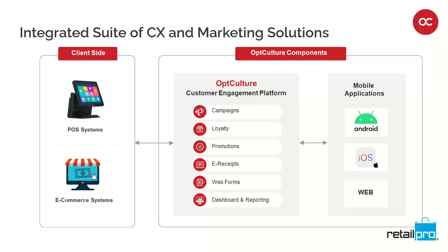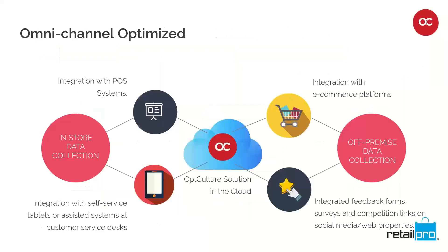Customers that enroll online can redeem rewards in-store, and customers that earn rewards in-store can redeem online. Opticulture also offers loyalty mobile applications that can display the latest offers for customers as well as keep them up-to-date on the rewards they've earned through their recent purchases. Taking a quick look at our software workflow, you can see that our solution was designed to bring all of the retailers' most important data into one easy-to-use, easy-to-understand platform.